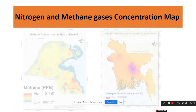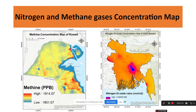Here you can see two types of maps. The first map is the methane concentration map of Kuwait — the unit is PPB, parts per billion — and we can calculate all of this for methane concentration in Google Earth Engine platform. The final product can be downloaded as a TIF format and the map created in ArcMap software. The same process also applies for the nitrogen dioxide concentration map for January 2020 — the unit is mole per meter square — and can be downloaded as a TIFF and worked with in ArcMap software.